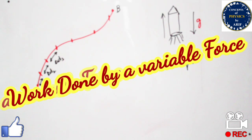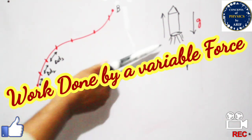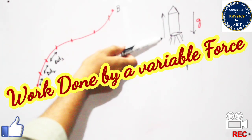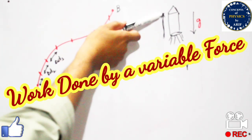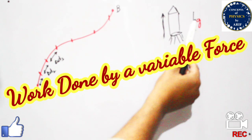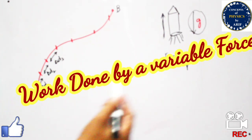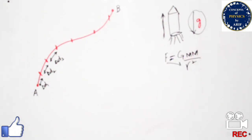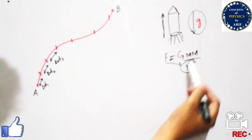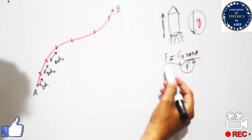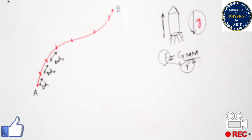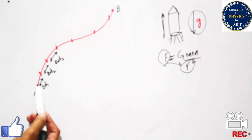Now we will discuss work done by a variable force. First we consider the example of a rocket. When a rocket moves away from the earth, it moves against the gravitational force — the rocket moves upward but gravitational pull acts downward. This force is proportional to the square of the distance from the earth, meaning it varies, so work is done by a variable force.